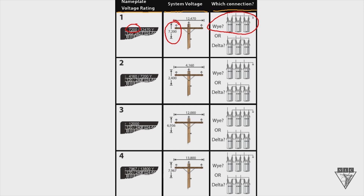In example two, we focus on that smaller number: 4,160 volts. How are we going to get 4,160 volts for our transformers? Looking at our system voltage, we accomplish that by doing a phase-to-phase connection. If it's a phase-to-phase connection, then we know that our primary is going to be connected delta.